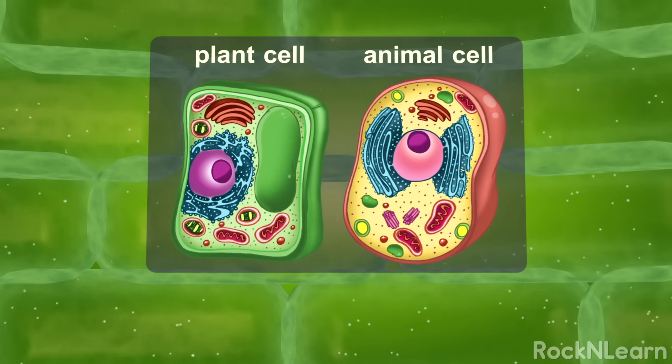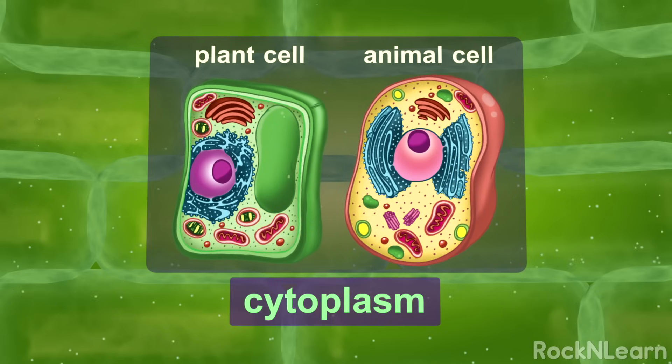And both cells have cytoplasm, which is a jelly-like substance that contains the organelles, the tiny organs of the cell.